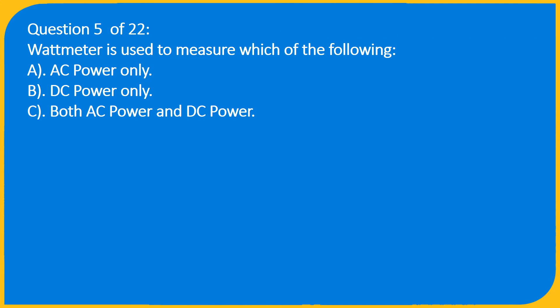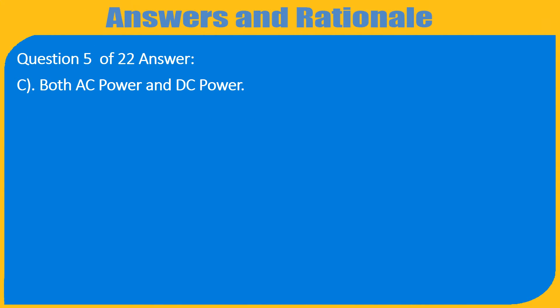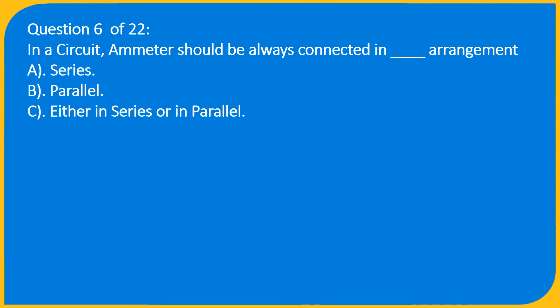Question 5 of 22: What meter is used to measure which of the following? A. AC power only, B. DC power only, C. Both AC power and DC power. Answer: C. Both AC power and DC power.